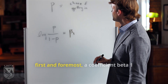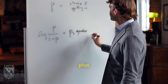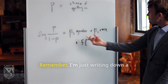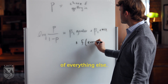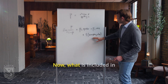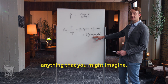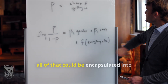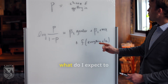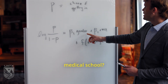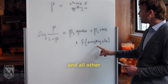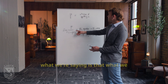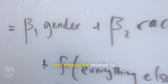So we write the log odds as a function of: first and foremost, a coefficient beta 1 times gender, plus a coefficient beta 2 times race, plus a third piece for everything else. Everything else could include test scores, MCAT, GPA, science GPA, interview transcripts, and essays. What this says is: what do I expect to influence my chances of getting into medical school? Potentially gender, potentially race, and all other merit-based academic, essay, and interview metrics.